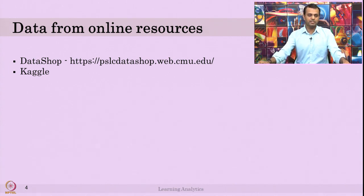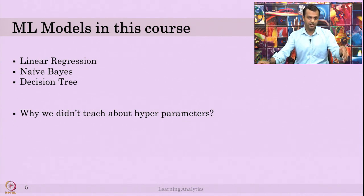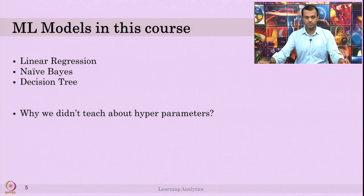Permission will be needed for publications — if a publisher finds out the data is not yours and from Kaggle, they will check whether you got permission from Kaggle or not. Also, I again recommend going and watching Andrew Ng's videos to understand linear regression, logistic regression, and Naive Bayes. Any resource that talks about machine learning, whether books or videos, will be good.